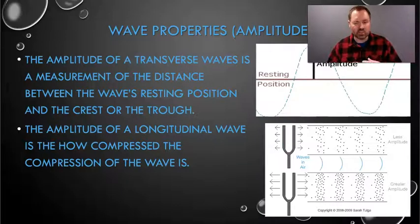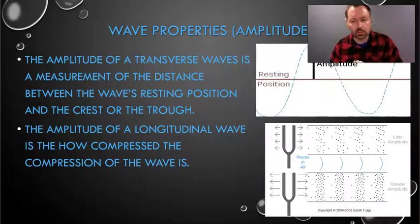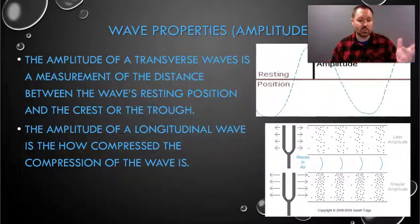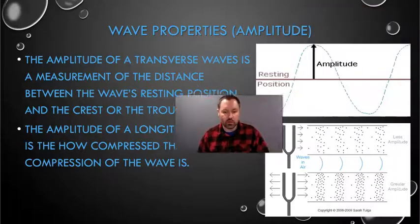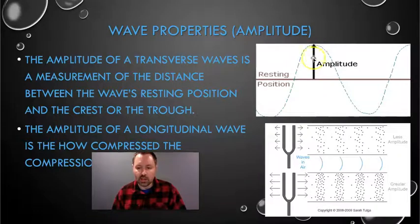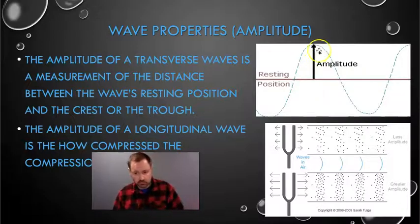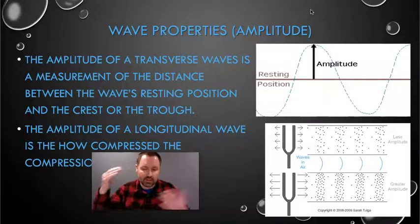We're about to go through some wave properties — in other words, different attributes of waves. The first wave property we need to go through is amplitude. The amplitude of a transverse wave — remember, a transverse wave is like a wave on an ocean — is the measurement of the distance between the wave's resting position through the crest or the trough. Here you can see a pretty large distance between the resting position. This is the resting position of the wave, and then the height of the wave right here is its amplitude. If the wave only got up to this high, it would have a smaller amplitude. If the wave got up to this high, it would have a much greater amplitude. So it's essentially saying how tall the wave is — that's its amplitude.